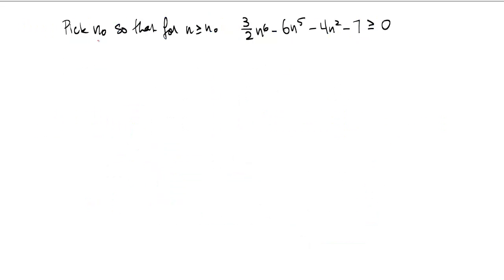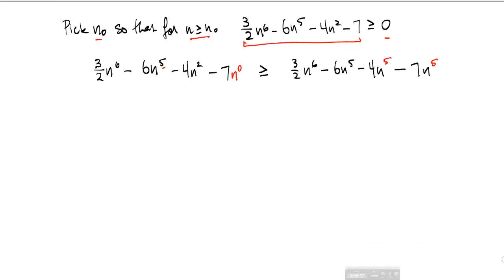We need to pick a value for n₀ so that for any n ≥ n₀ the remaining expression is ≥ 0. The expression is complicated because there are many terms with different coefficients, so we estimate it with a simpler function. Since we are trying to lower-bound this expression, we must ensure our estimate is itself a lower bound. We do this by taking each lower-order term and replacing its exponent by 5.